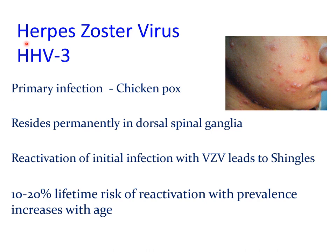The next virus in the human herpes group is the varicella zoster virus, or type 3 human herpes virus. The primary infection with varicella zoster virus, seen in children, is known as chickenpox and is characterized by multiple itchy vesicles on the face which can also lead to facial scarring. After the primary infection, the virus resides permanently in the dorsal spinal ganglia, and reactivation of the initial infection can lead to shingles.